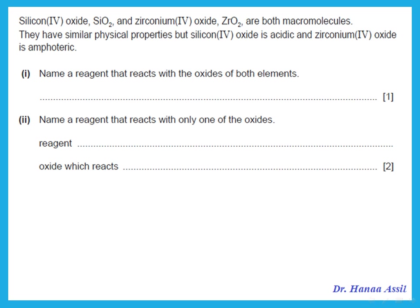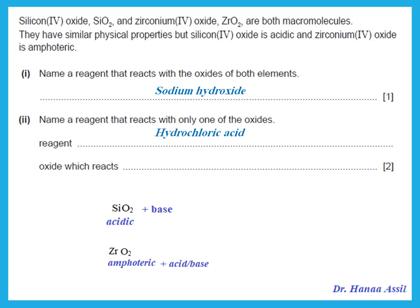Silicon dioxide and zirconium oxide are both macromolecules with similar physical properties, but silicon dioxide is acidic — it should react with a base. Zirconium oxide is amphoteric — it can react with either acid or base. Name a reagent that reacts with oxides of both: since both of them react with a base, name a base like sodium hydroxide. Name a reagent that reacts with only one of the oxides: silicon dioxide will react only with base and not with acid, so if I put hydrochloric acid, it will react with only zirconium oxide and not silicon dioxide.